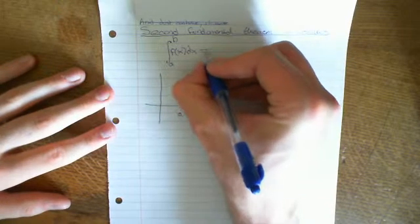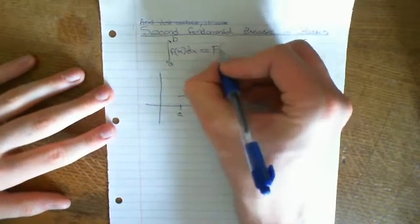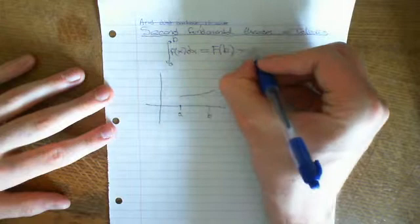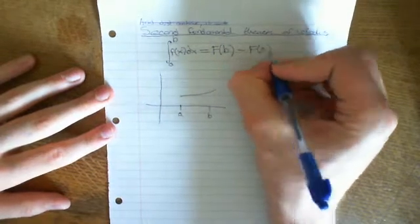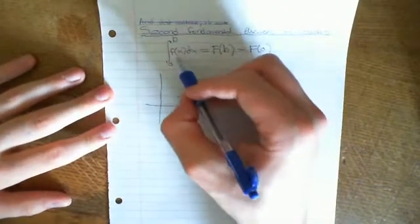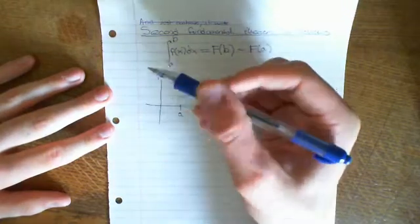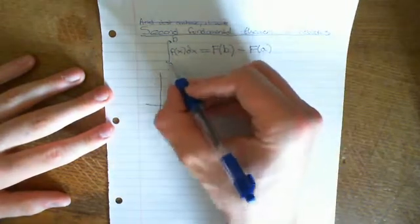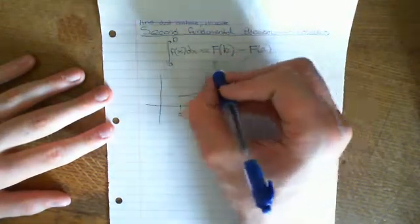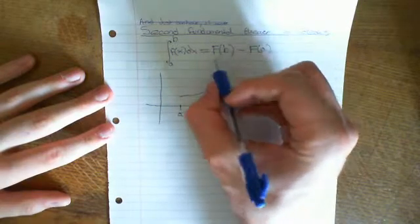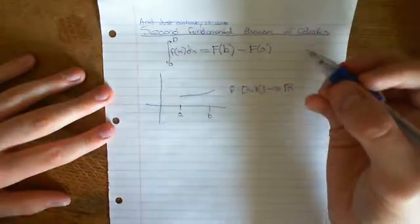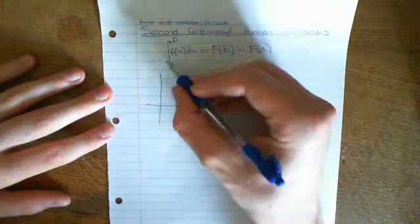The integral is equal to the anti-derivative evaluated at B minus the anti-derivative evaluated at A. What we'll show is that if it is integrable on [A,B], then the equivalent statement, the first fundamental theorem of calculus, is that there exists an anti-derivative.